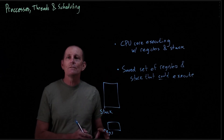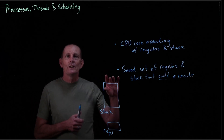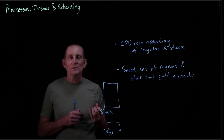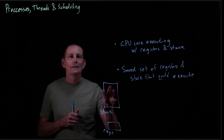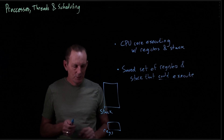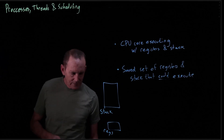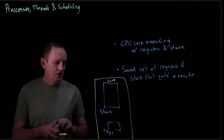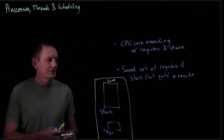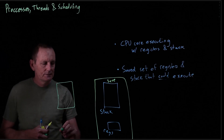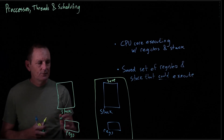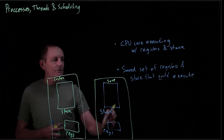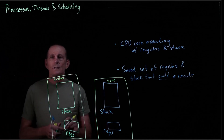So what we do is we want to save the state of everything. What's the state? Well, there's memory, but that's shared state among all the threads. So what's specific to the thread? The stack and the registers. So what we do then is save these, and then restore another set of registers and stack.